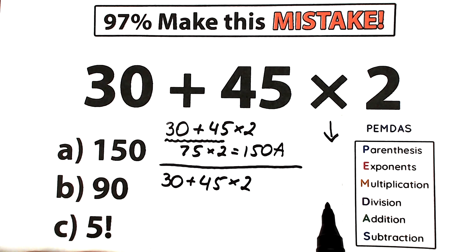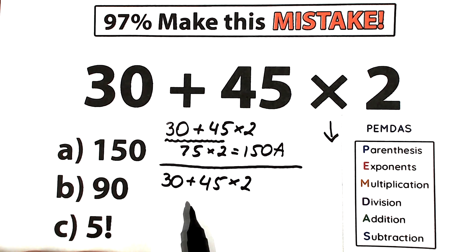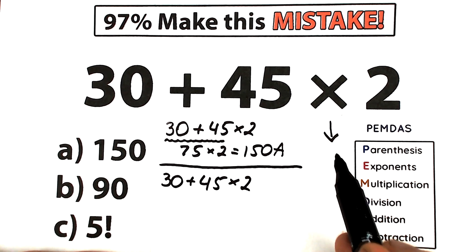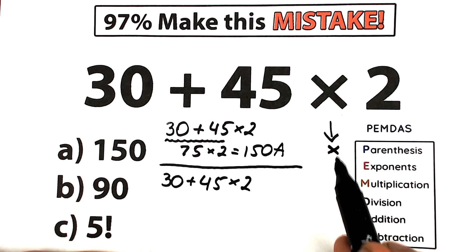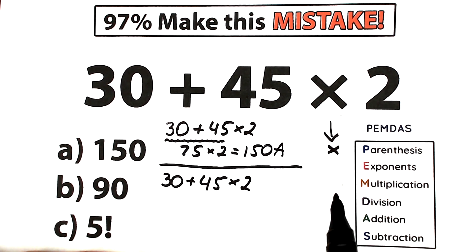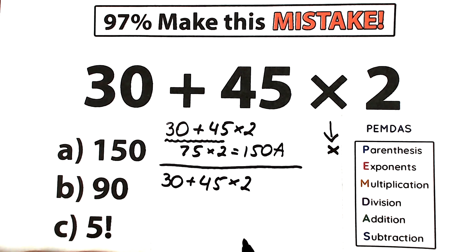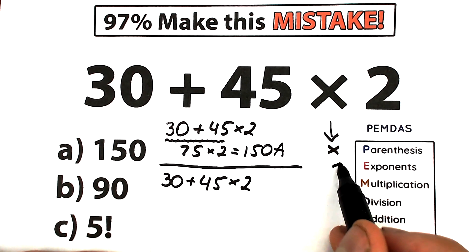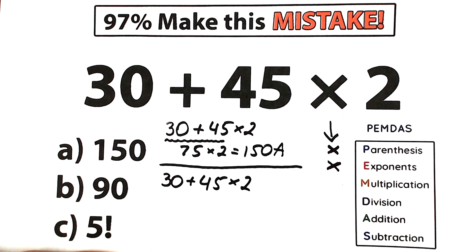The first step in PEMDAS is parentheses. As I mentioned, we don't have any parentheses, so we can easily skip this step — which is great for us, because parentheses would make this more complicated. What about exponents? We don't have any exponents, no squares or cubes, so we skip that step as well.